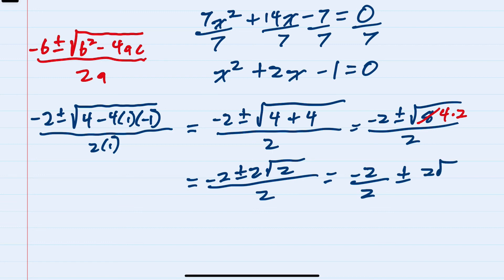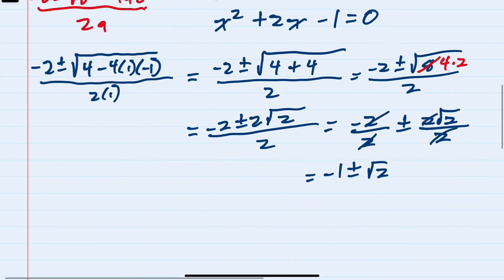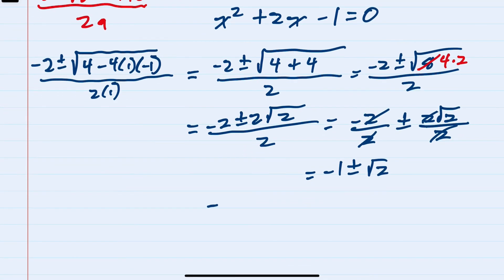And then separating this would be negative two over two plus or minus two square roots of two over two. So we have negative one plus or minus the square root of two when we simplify each one of these.